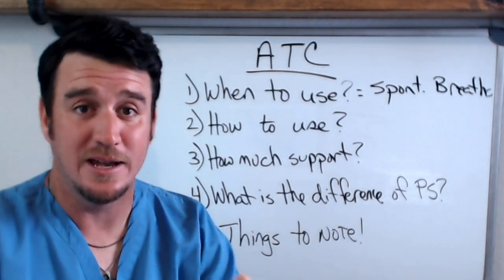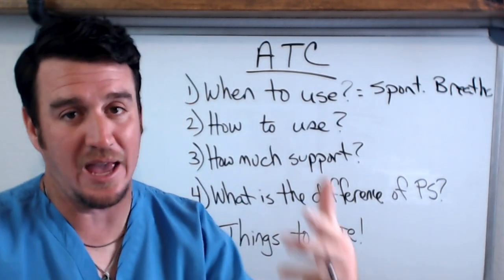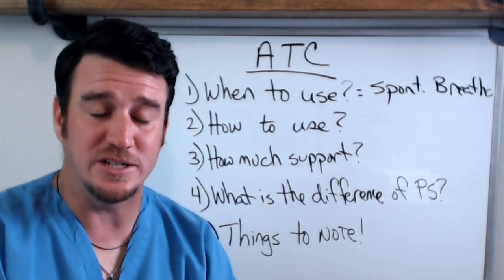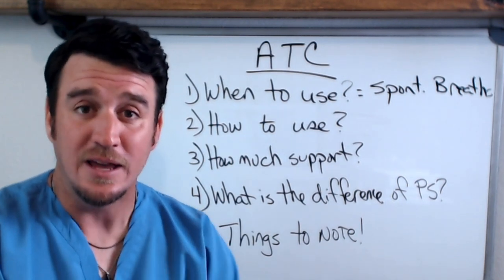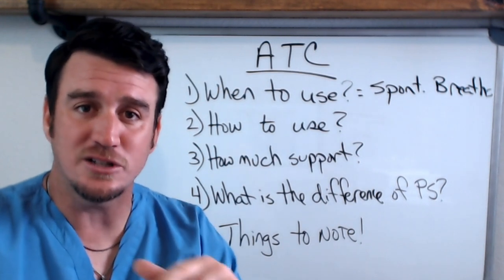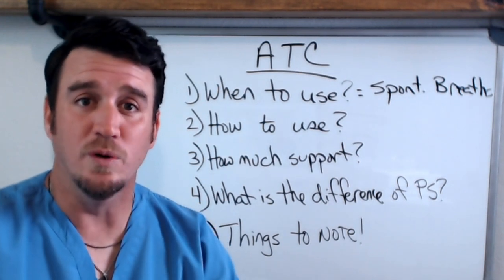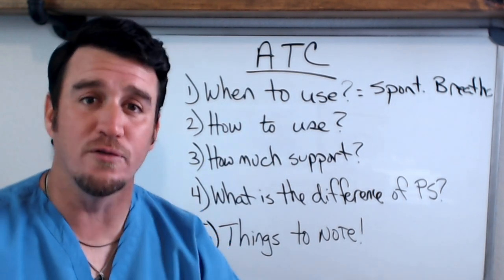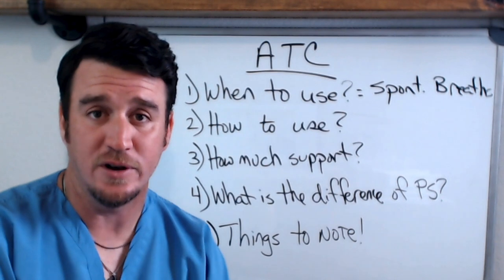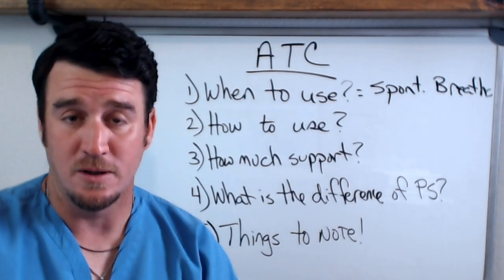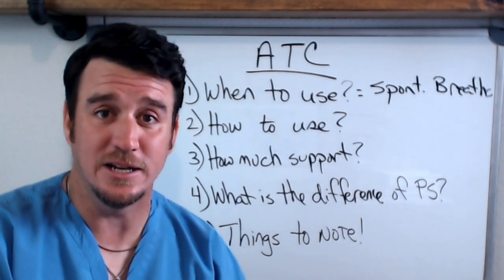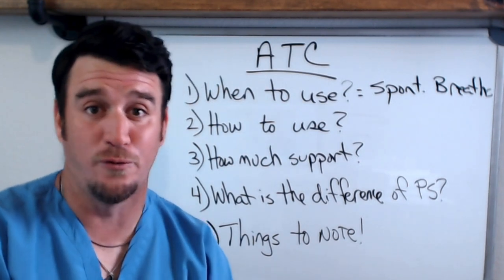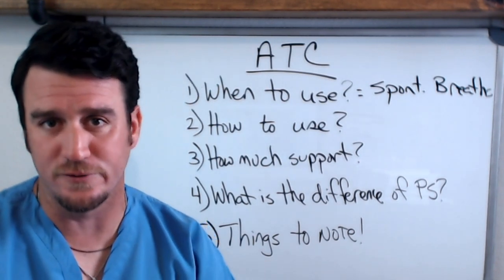This could be SIMV, this could be CPAP, this could be APRV or bi-level — any type of mode where a patient can take a spontaneous breath. ATC, automatic tube compensation, will be relevant to providing enough support to that patient to overcome the resistance of the artificial airway. That's what ATC does: it compensates for the resistance of the artificial airway.